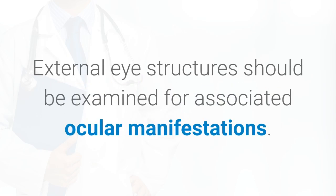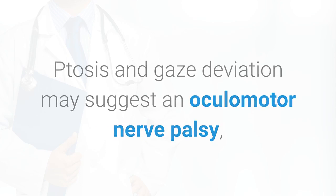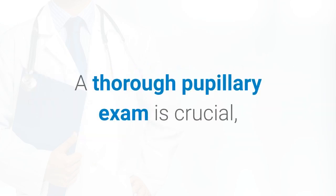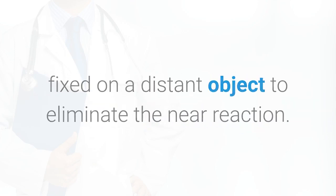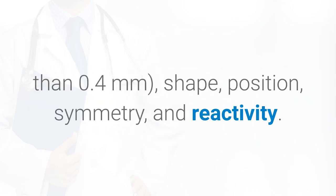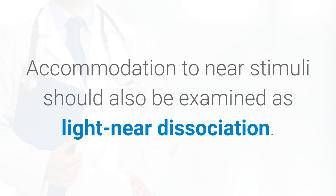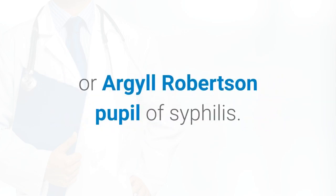External eye structures should be examined for associated ocular manifestations. Ptosis and gaze deviation may suggest an oculomotor nerve palsy, whereas proptosis may indicate an underlying space-occupying lesion within the orbit. A thorough pupillary exam is crucial and is best done in dim light with the patient's eyes fixed on a distant object to eliminate the near reaction. Pupils should be compared for size in light and dark — normal size difference is less than 0.4 mm — as well as shape, position, symmetry, and reactivity. The pupils should be evaluated for direct and consensual responses, and accommodation to near stimuli should be examined, as impaired light reaction with a normal near reaction may suggest Adie's tonic pupil or Argyll Robertson pupil of syphilis.